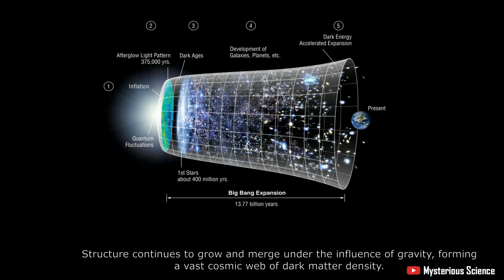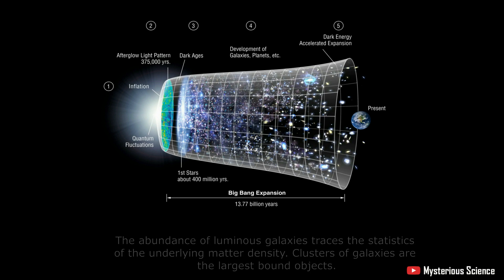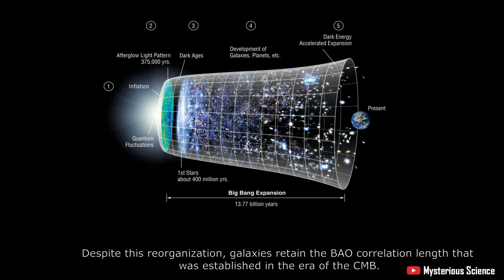4. Structure continues to grow and merge under the influence of gravity, forming a vast cosmic web of dark matter density. The abundance of luminous galaxies traces the statistics of the underlying matter density. Clusters of galaxies are the largest bound objects. Despite this reorganization, galaxies retain the BAO correlation length that was established in the era of the CMB.